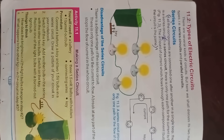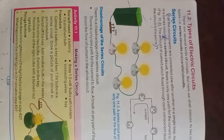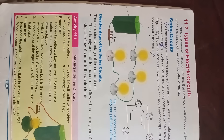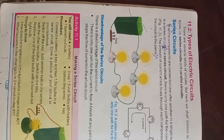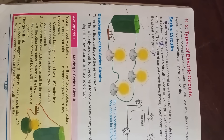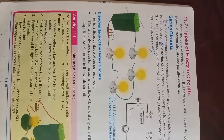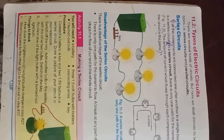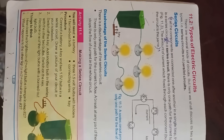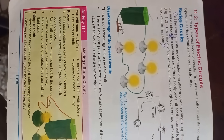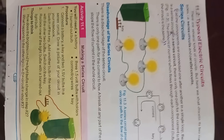Activity 1: You will need a battery, three 1.5-volt bulbs with holders, one burned-out bulb, connecting wires, and a key. Procedure: Connect a battery, a key, and two 1.5-volt bulbs in a series circuit. Draw the circuit in your notebook. Switch off the key; add another bulb in series. Switch on the key. Replace one light bulb with a burned-out bulb. Think: how does brightness change, and what happens to the other lights?